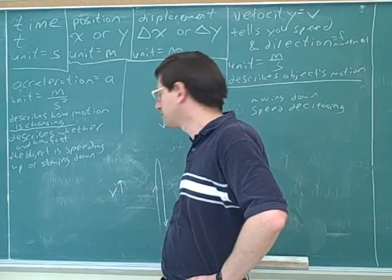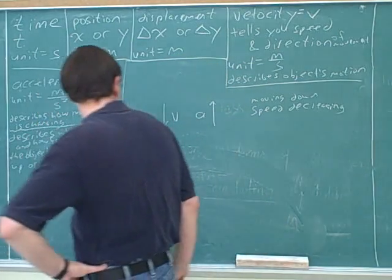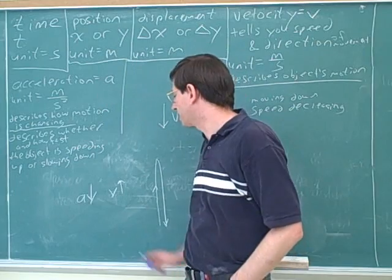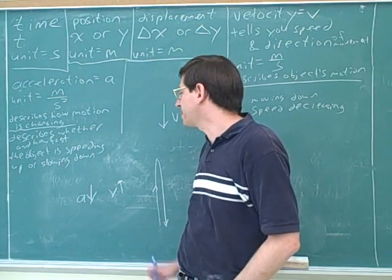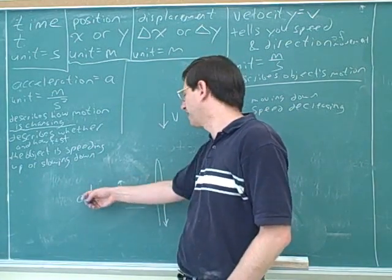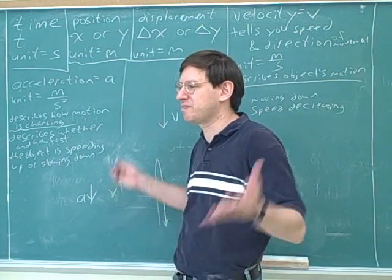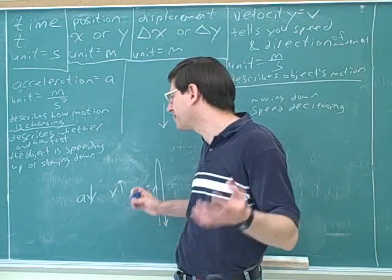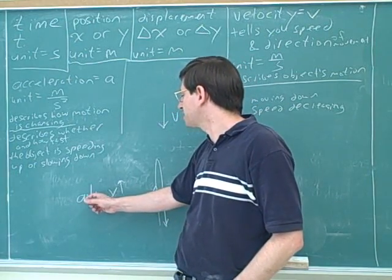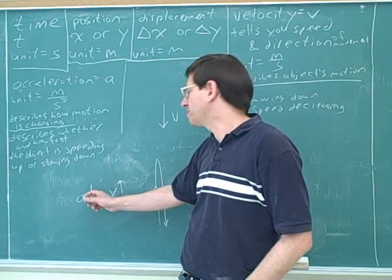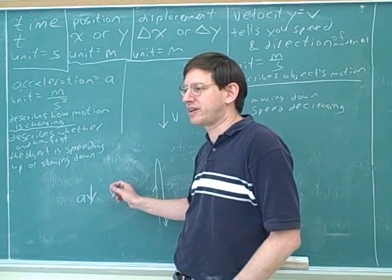So the velocity is upward and the acceleration is downward — a good example of acceleration and velocity being in different directions. There is nothing paradoxical about that; it probably happens about 50% of the time. And again, just because the acceleration arrow points down doesn't mean the object is moving down. It means the object is slowing down because the acceleration is anti-parallel to the velocity.